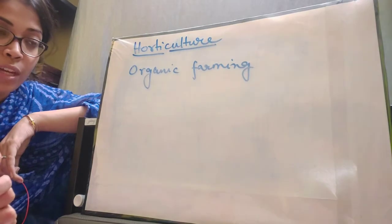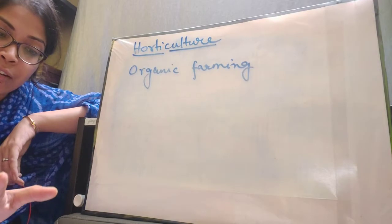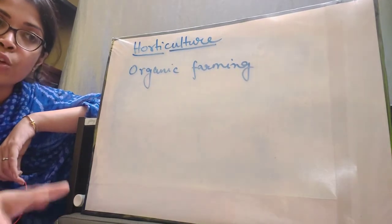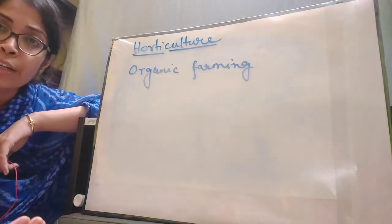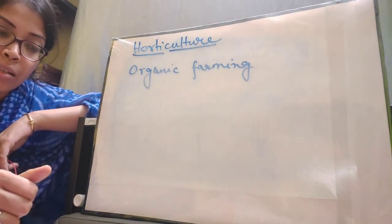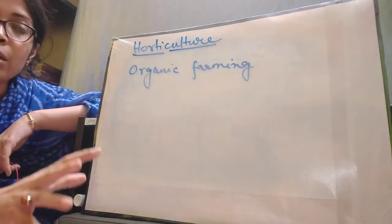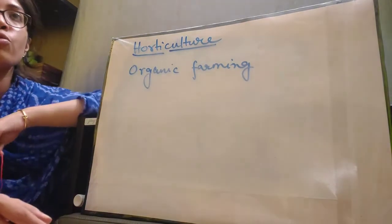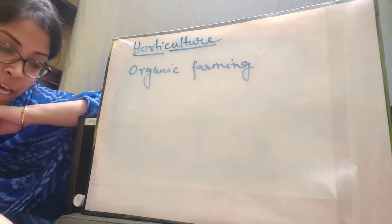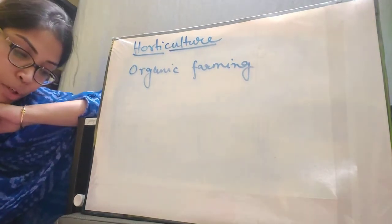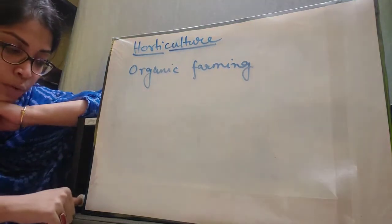The second disadvantage is that organic produce is very expensive. Just like the bio-fertilizers such as Rhizobium and Azotobacter, many such organic substances are needed to do organic farming. Since this is not the traditional method of farming, all the substances that are needed to do organic farming are costly, and thus the whole process of organic farming is very expensive.